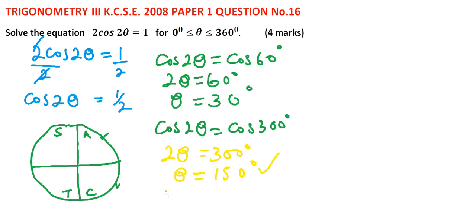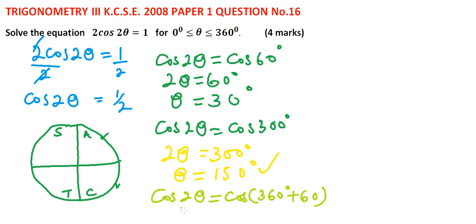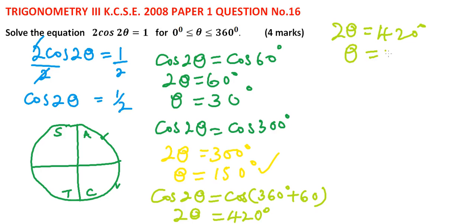To find the other angles, we use the fact that cosine is periodic. We write cos(2θ) = cos(360° + 60°), so 2θ = 420°, which implies θ = 210°.